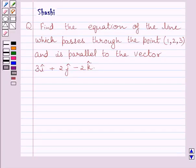Hi and welcome to the session. I am Shashi and I am going to help you with the following question. Find the equation of the line which passes through the point (1, 2, 3) and is parallel to the vector 3i plus 2j minus 2k.